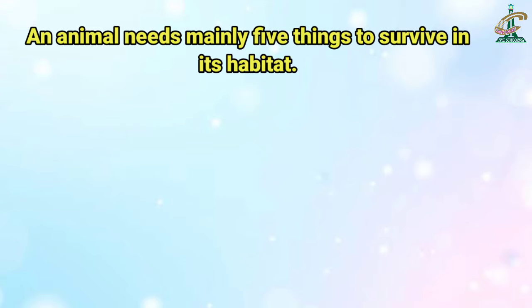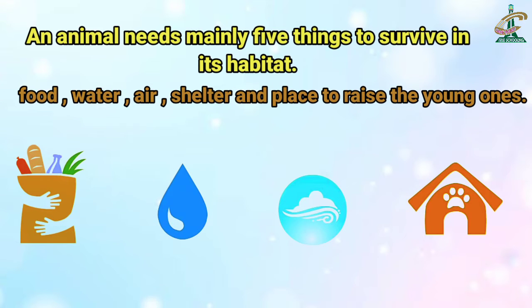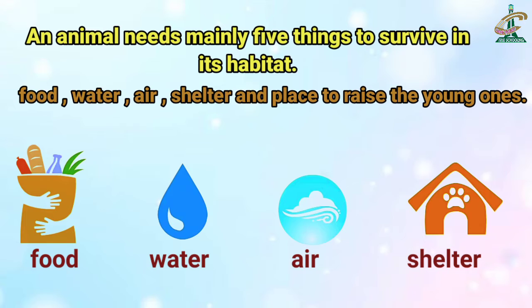An animal needs mainly five things to survive in its habitat. ایک animal کو جہاں پہ وہ رہتا ہے، اسے پانچ بنیادی چیزوں کی ضرورت ہوتی ہے: food, water, air, shelter and place to raise the young ones. اسے کیا کیا چاہیے ہوتا ہے؟ Food, water, air to breathe, shelter یعنی کہ رہنے کی جگہ اور وہ جگہ جہاں پہ وہ اپنے بچوں کو بڑا کر سکے۔